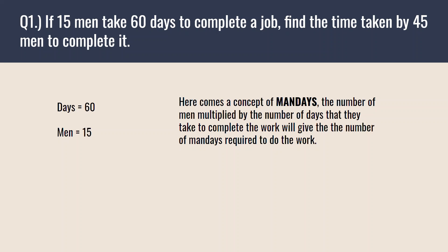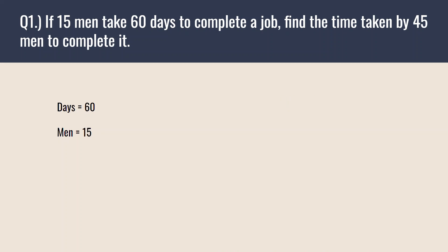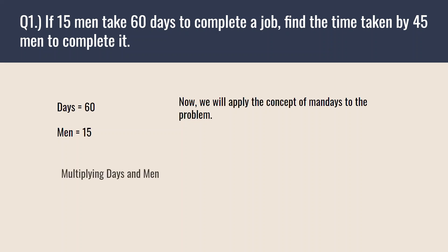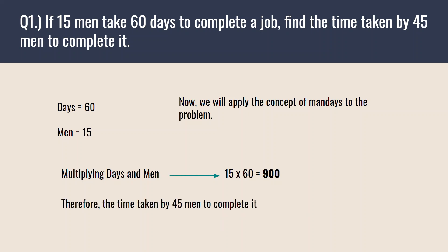This concept comes in very handy for these types of questions. The days are 60 and the men are 15. Applying the concept of man-days, multiplying days and men: 15 × 60 = 900. Therefore, the time taken by 45 men to complete the job would be 900 ÷ 45 = 20 days.